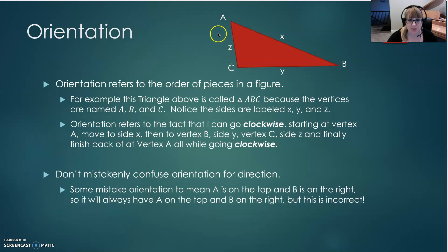Orientation refers to the fact that I can go around this triangle in a clockwise motion. I'm going to start here at vertex A, and when I move from vertex A going clockwise, I encounter side X. Continuing on in a clockwise direction, I now hit vertex B, continuing on clockwise, I now hit side Y, continuing to vertex C, then to side Z, and then finally back to vertex A.